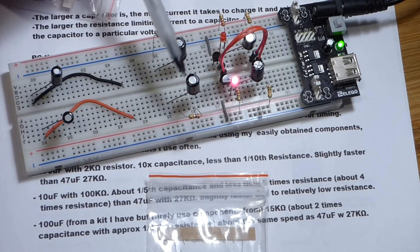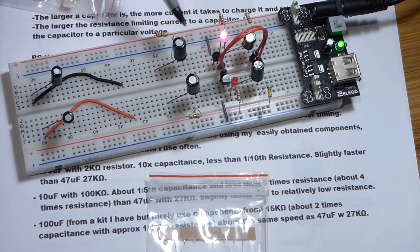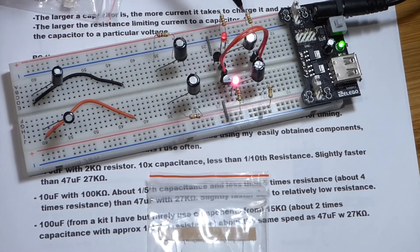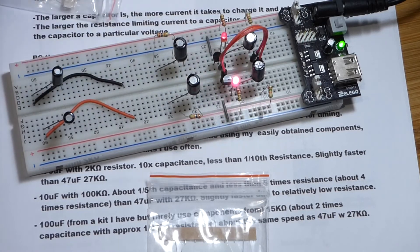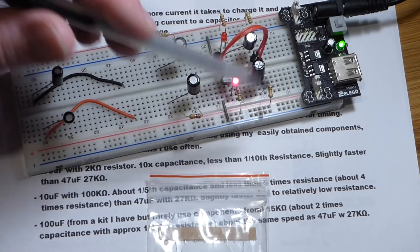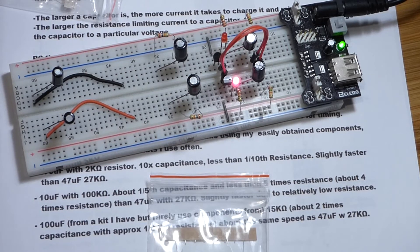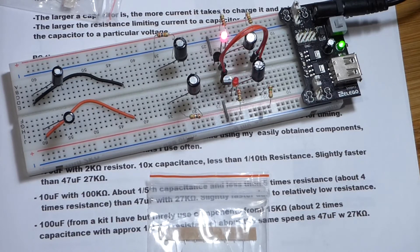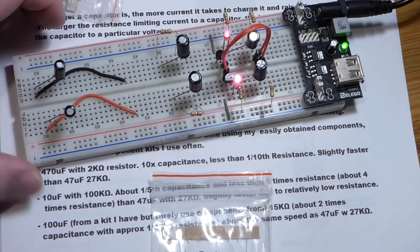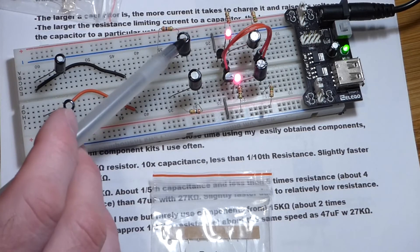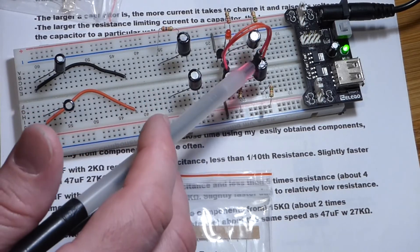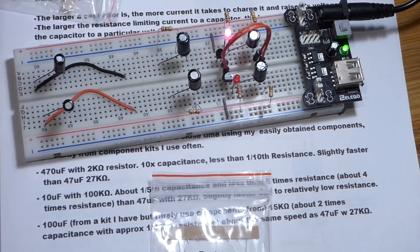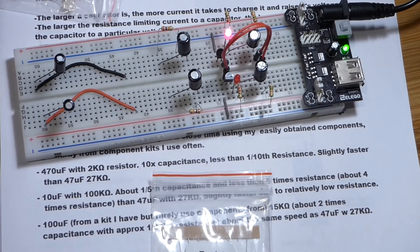And there we go. I moved the 47 microfarad down here, swapped them for 100. I moved the 27 kiloohm resistors down and swapped them for about the one half of the resistance, 15 kiloohm resistors up there. And you can see it's flashing pretty much the same speed, maybe exactly the same speed. And so, we made that adjustment. Instead of the value on the sheet, we went with twice the capacitance, or twice the capacitance, but half of the resistance and got pretty much the same speed.